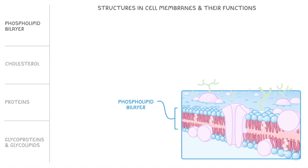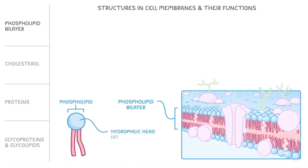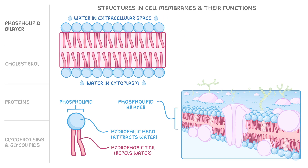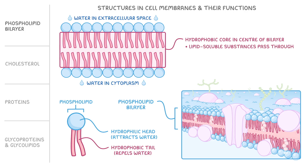Starting with the phospholipid bilayer, this is made up of phospholipids, each of which has a hydrophilic head that attracts water and a hydrophobic tail that repels water. When we get a lot of phospholipids together, their hydrophilic heads face outwards towards the water in the cytoplasm and the water in the extracellular space, while the hydrophobic tails face inwards towards each other, away from the water. This arrangement forms a barrier with a hydrophobic core in the centre of the bilayer, which allows lipid-soluble substances to pass through but not water-soluble substances.